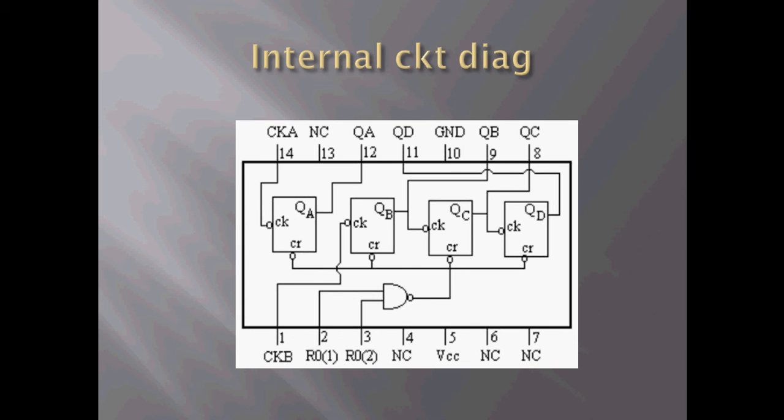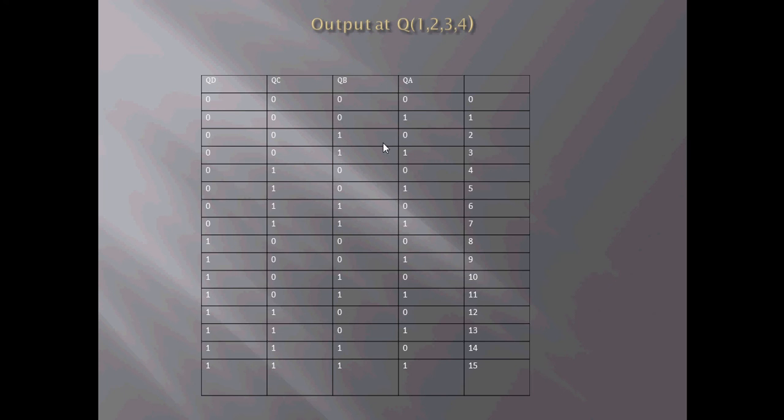the mod 2 counter is made with the help of flip flop A. All you need to do is give your clock to pin number 14 and take the output from QA. QA comes out as 0 1 0 1, which is basically a mod 2 counter that counts 0 and 1.